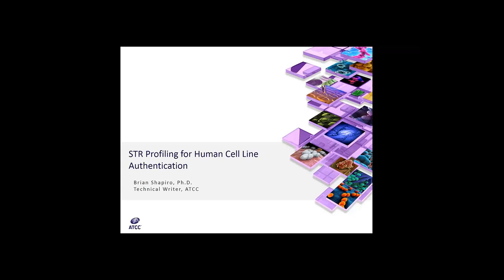Dr. Shapiro is a technical writer at ATCC. In this presentation, Dr. Shapiro will discuss many of the cell lines known to be misidentified and touch upon the loss and cure to the state of science by the use of these cells in research. In addition, Dr. Shapiro will highlight the tissue culture practices and testing procedures recommended by funding agencies, journal editors, and scientific societies to reduce cell line misidentification. Finally, Dr. Shapiro will focus on the use of short tandem repeat profiling for human cell line authentication.